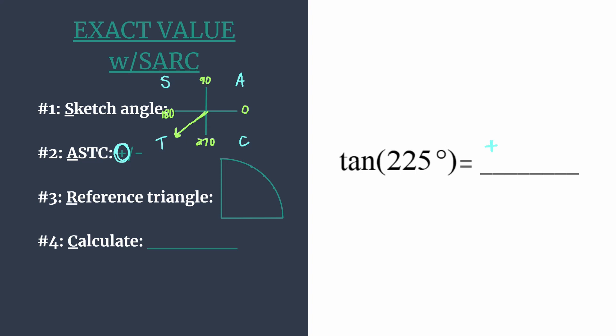So now that we have this we are ready to find our reference triangle and the coordinates that we need to work with. So our reference angle is the rotation between the terminal side of the angle and the x-axis and so we know that's going to be 45 degrees. It's just 45 degrees past 180 to get to 225.